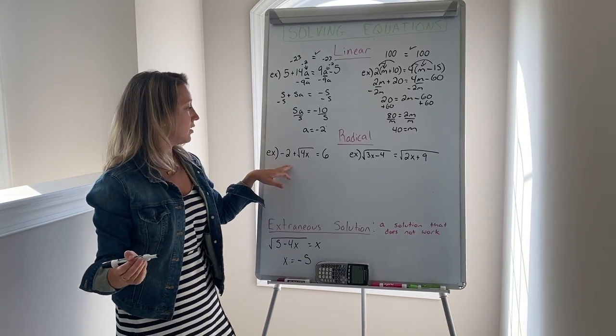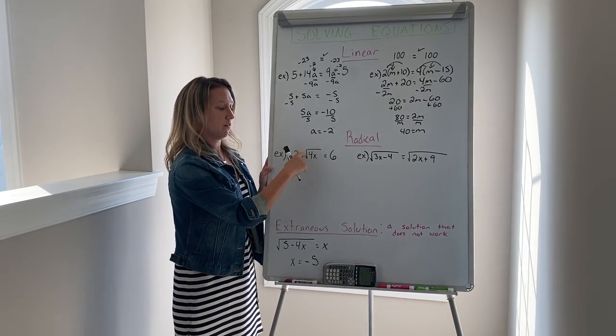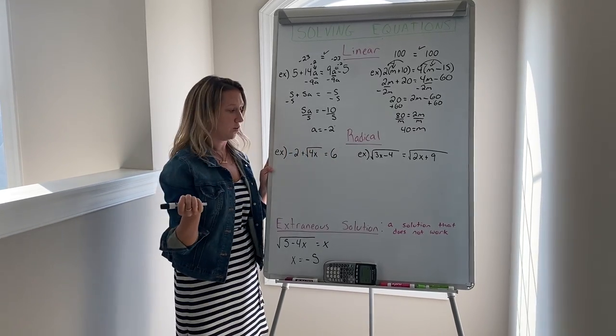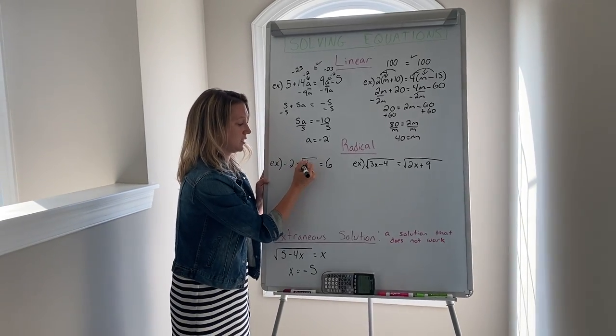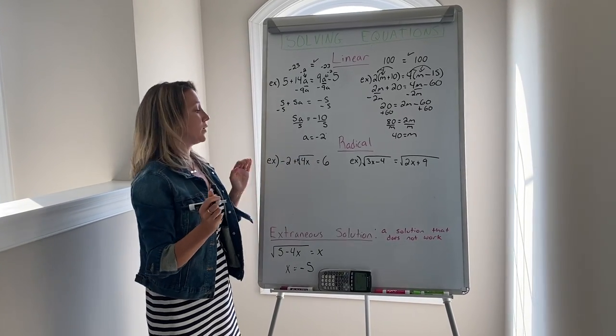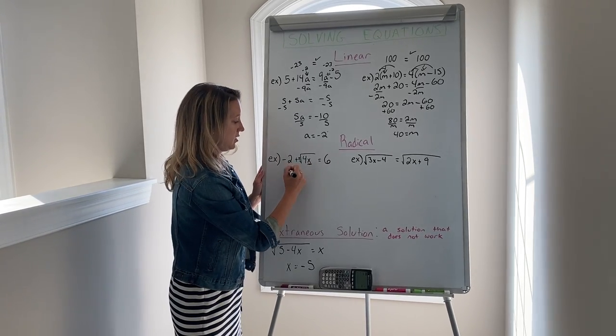For this right here, this is a radical equation because it has the radical. It could be a square, a cube, different types of radicals. But if there's nothing here, this is automatically an index of 2, so it's a square root. Again, you want to isolate the variable. Since this is negative 2, we want to add it to the other side.